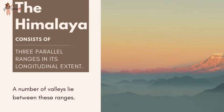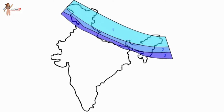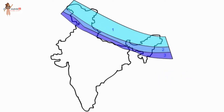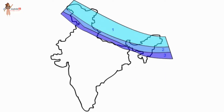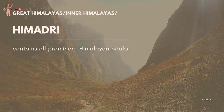The Himalayas consist of three parallel ranges in their longitudinal extent, with a number of valleys lying between these ranges. The northernmost range is known as the Great or Inner Himalayas, also called Himadri. The range lying to the south of Himadri forms the most rugged mountain system and is known as Himachal or Lesser Himalaya. The outermost range of the Himalayas is called the Shivaliks.